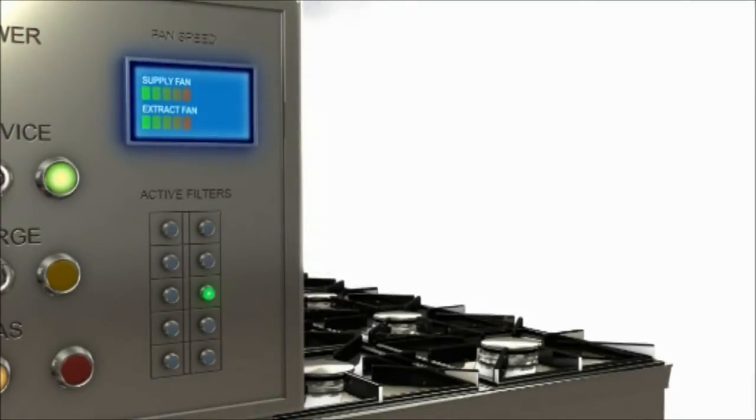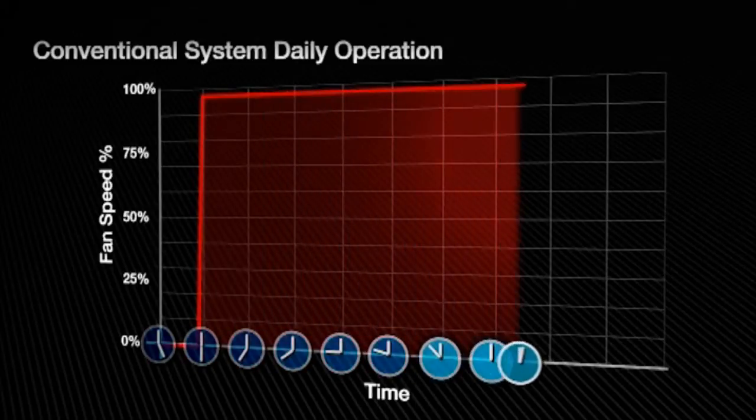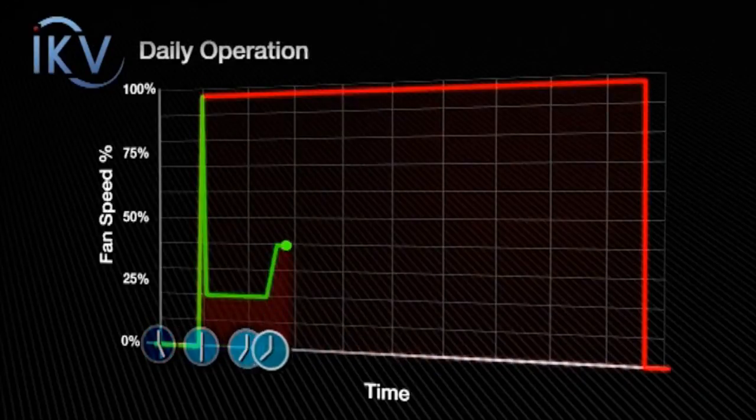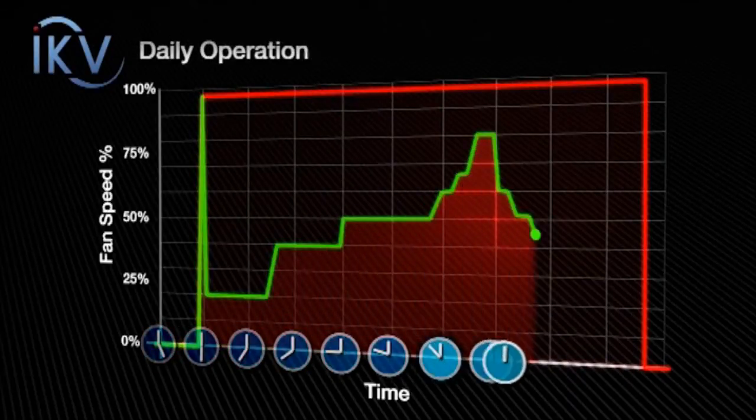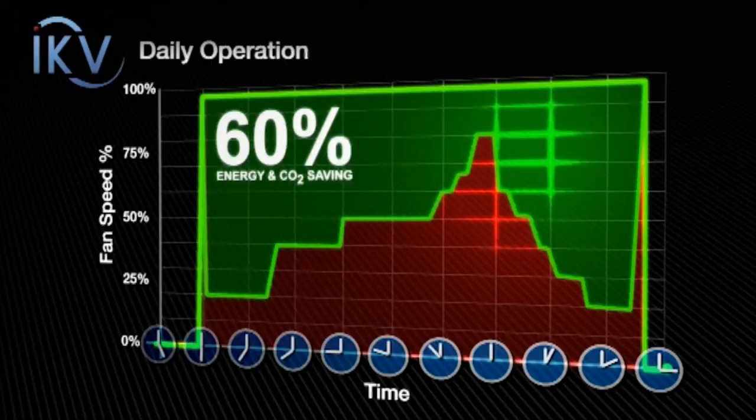This saving is represented in the following graph. The red line represents a conventional system running at full extract throughout the day. The green line represents the running operation of the IKV. The highlighted area represents the potential saving in both energy and CO2 emissions.